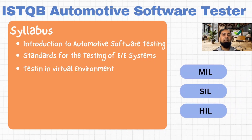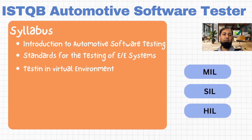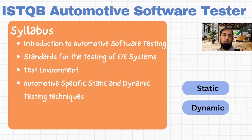The next section is about testing in virtual environments. There are three different environments covered in this certification: MIL which is Model in the Loop, SIL Software in the Loop, and HIL Hardware in the Loop. The last part of the certification is about static and dynamic testing techniques specific to the automotive domain.